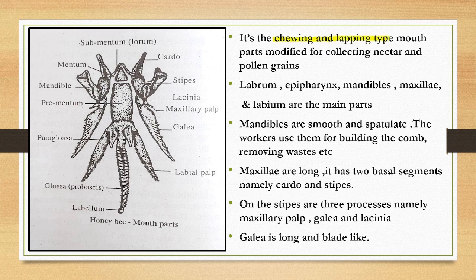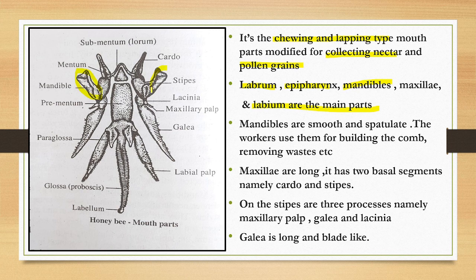Now moving on to honey bee — chewing and lapping type. The function is for the collection of nectar and pollen grains. The main parts are labrum, epipharynx, mandibles, maxilla, and labium. The mandibles are smooth and spatulate. They are used to build the comb and for removing waste.